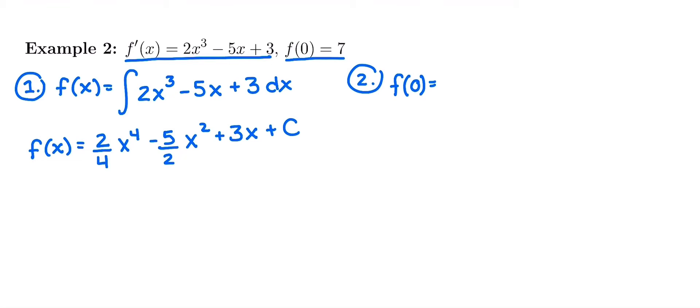So we'd have, well, it starts off with 2/4. I'm just going to reduce that. 2/4 is the same thing as 1/2. And then we have (0)⁴ - 5/2(0)² + 3(0) + C, all has to equal 7.